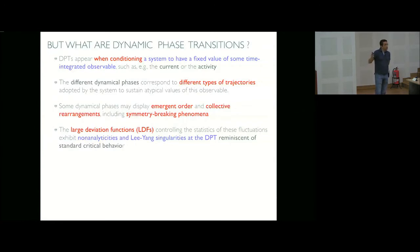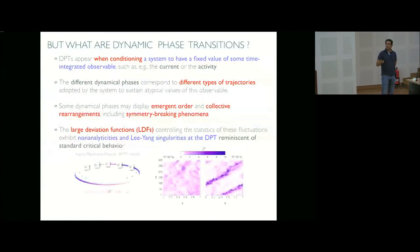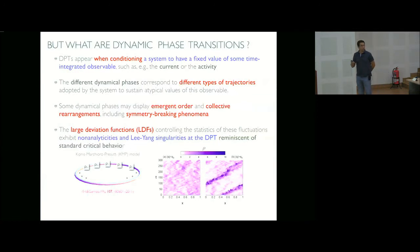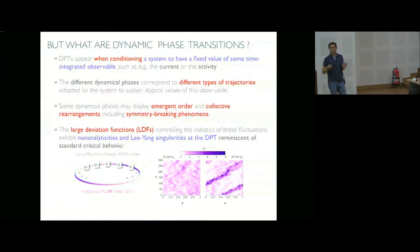The large deviation functions which control the statistics of fluctuations display non-analyticities and Lee-Yang singularities at the dynamic phase transition, which are very reminiscent of standard critical behavior. Let me give one simple example: the Kipnis-Marchioro-Presutti model of heat transport. This is a very simple one-dimensional lattice model where each site has some energy, and the system evolves via binary collisions between nearest neighbors stochastically. In one of these collisions, the energy of the pair is randomly redistributed. It's a simple model of diffusion or transport.